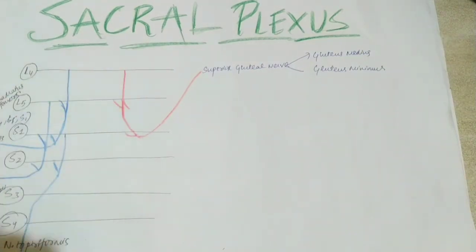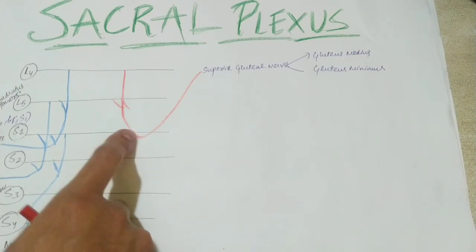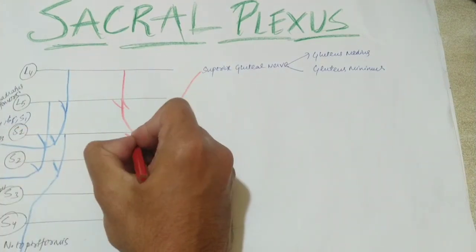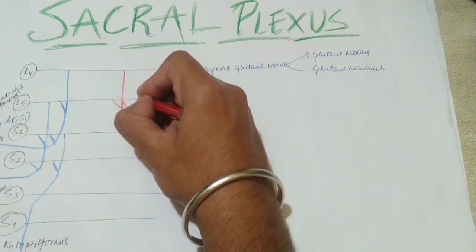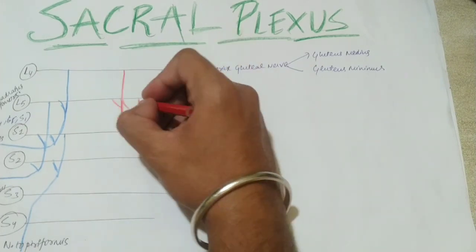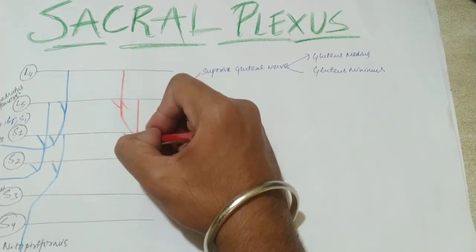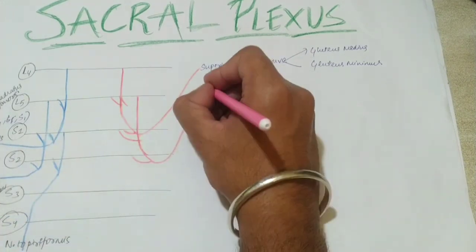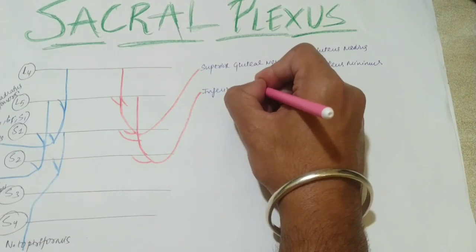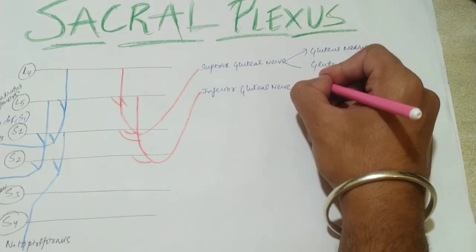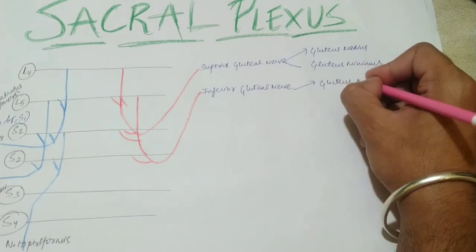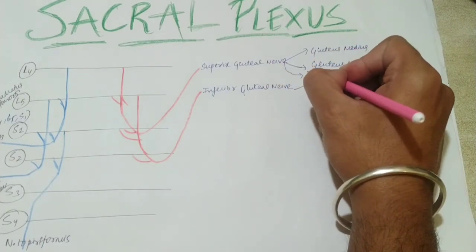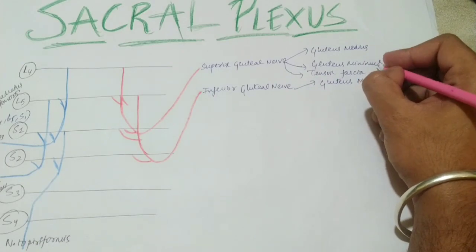The next nerve from the anterior division is the inferior gluteal nerve, coming from L5, S1, and S2 fibers. It supplies only one muscle: gluteus maximus. Also, I forgot to mention that the superior gluteal nerve additionally supplies tensor fascia latae.